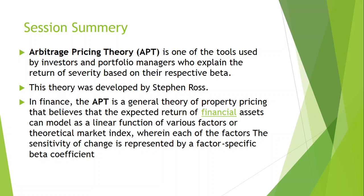Another assumption is that markets are perfect. Perfect market conditions form the supporting base for Arbitrage Pricing Theory. It implies there are a large number of investors and every kind of price-sensitive information is made available to all investors as soon as it is generated. This happens when different segments of the market work on principles of full disclosure and transparency. As a result, none of the investors can create extra impact by unduly influencing share prices, and securities portfolios are priced efficiently in the long run.